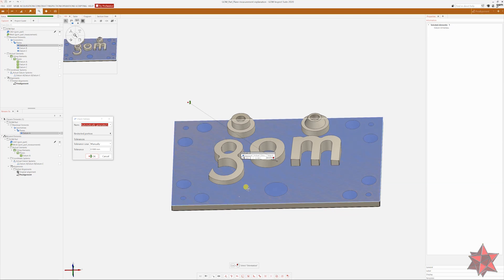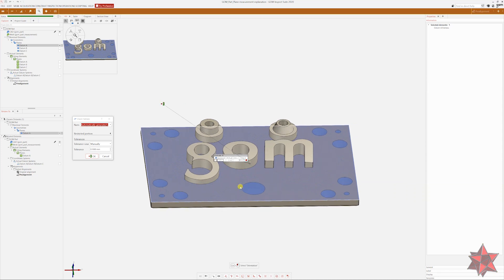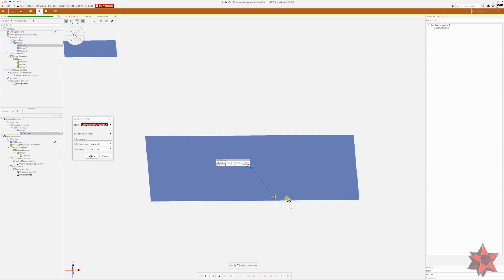Good, so this is how you evaluate the flatness of a plane in GOM Inspect. And if you want to see for example only the flatness, only this element, you will select E on your keyboard to see only the plane, only the evaluated plane.